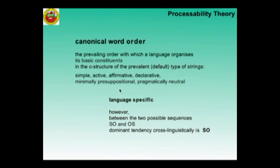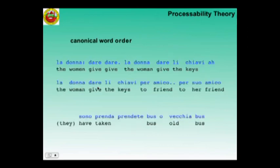A production example of this unmarked alignment stage in Italian: la donna dare li chiavi — subject, verb, object, and indirect object, per su amico. Within this stage you have also not only SVO but also pro-drop.